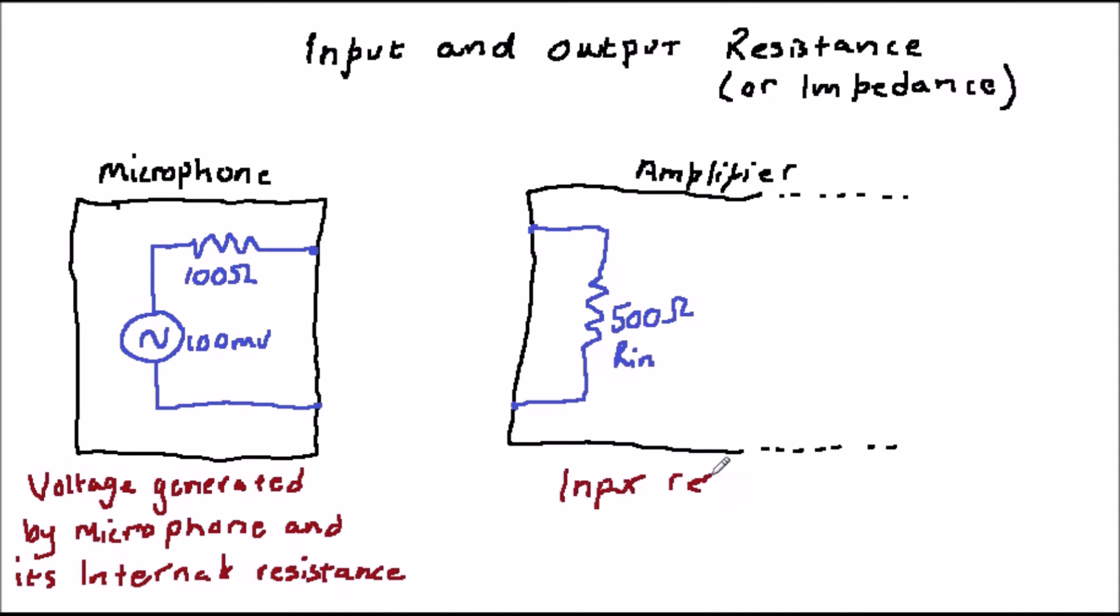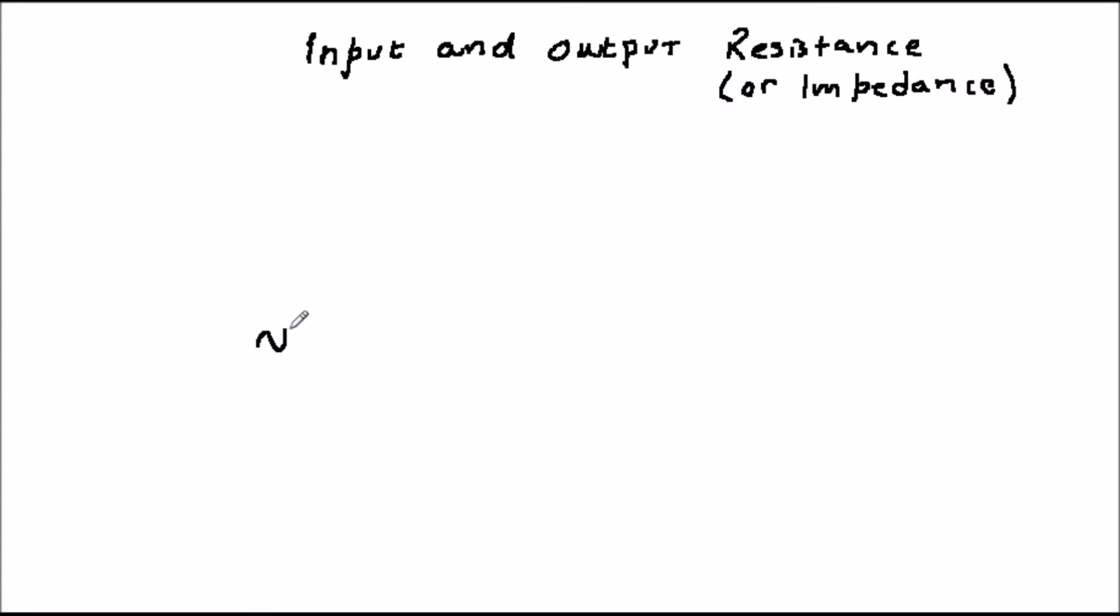So, how much of the 100 millivolts generated by the microphone actually gets into the amplifier to get amplified and used? Well, we can redraw the circuit shown in the diagram and if we do this we'll find that it's just a potential divider.